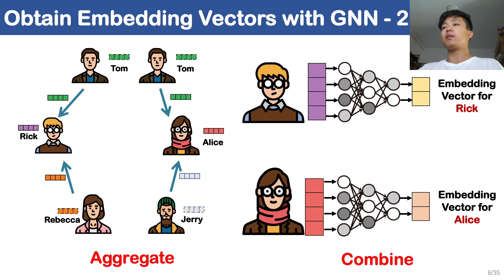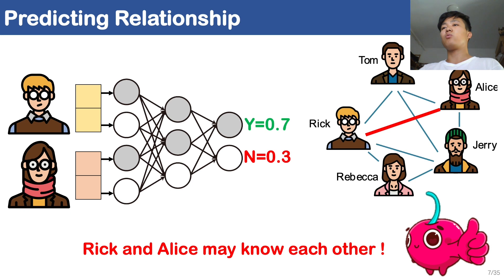Then the aggregate function is applied to the sampled graphs, which makes the feature vectors of the sampled users flow along edges and aggregate to the target users. Finally, the temporarily obtained vectors of Rick and Alice are operated by a neural network in combination, and the output data are embedding vectors for Rick and Alice. Note that in a multi-layer GNN scheme, these three steps will be re-performed several times. Finally, a neural network is used to predict the probability of the relation between Rick and Alice, and we can see there is a 70% chance that Rick knows Alice. So the recommender can recommend them to each other.